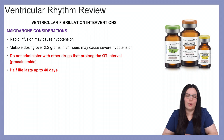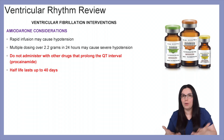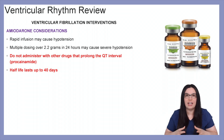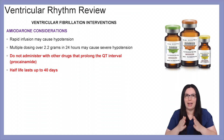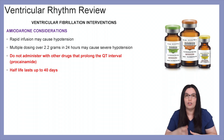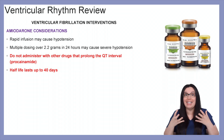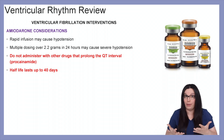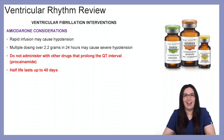Considerations for amiodarone: rapid infusion may cause more hypotension, which is why we need to sufficiently monitor these patients. Multiple dosings over 2.2 grams in 24 hours may increase hypotension and make it more severe, so we need to be very careful with maximum doses. We also don't want to administer this with other medications that prolong QT intervals, since amiodarone will also prolong QT intervals. Lastly, the half-life for amiodarone is at least 40 days, which is why it becomes extremely toxic when given in higher doses.